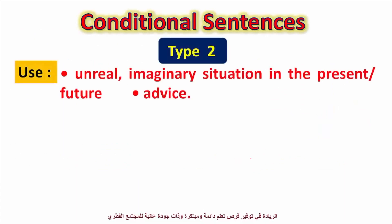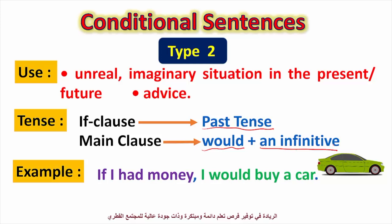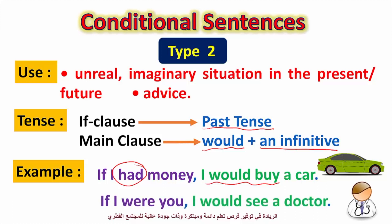In type two, we use it when we speak about an unreal or imaginary situation in the present or future, and also when we give advice. In the if clause we use past tense, and in the main clause we use would plus infinitive. Example: 'If I had money, I would buy a car.' Here 'had' is past simple and 'would buy' is would plus infinitive.